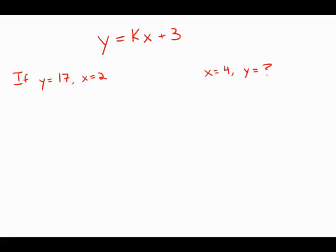We're given the equation y equals kx plus 3, and we're told in the equation k is a constant. If y equals 17, x equals 2, what is the value of y when x equals 4?